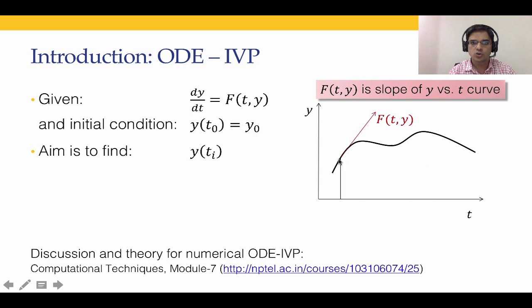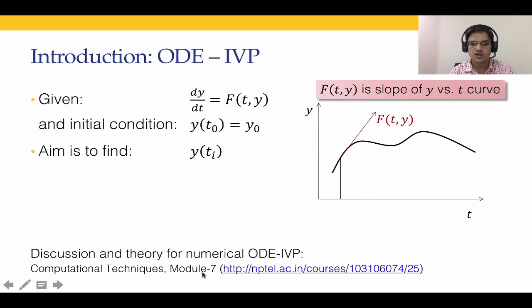Starting from y0, t0, we march forward to find y1,t1; y2,t2; y3,t3; and so forth, eventually developing the entire curve y as a function of t — that is the actual solution we intend to find using a numerical scheme. The theory for numerical methods for solving ODE initial value problems is discussed in the Computational Techniques course module 7. In this course, we will use MATLAB to solve these problems without covering the underlying theory.